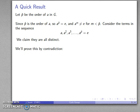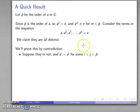A useful proof strategy for claiming things are distinct is proof by contradiction. We claim all these terms are distinct, so let's assume they're not. Suppose the terms are not distinct, which means a^i = a^j for some i < j < p̂, where i is the power of the first and j is the power of the second non-distinct term.